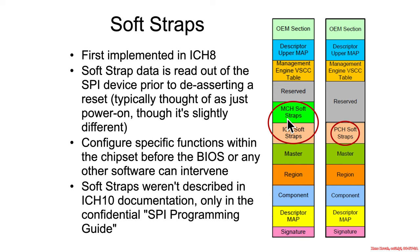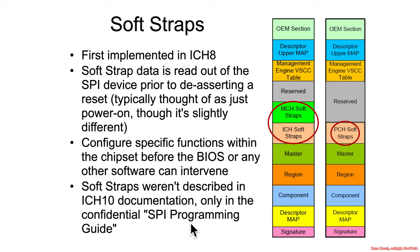Soft straps allow for reconfiguration of hardware functionality without having to physically reconfigure how it's laid out on the PCB. There were MCH straps and ICH straps in the north bridge/south bridge configuration, and PCH straps now on PCH systems. Even back in the ICH 10 world, the soft straps for the ICH 10 were not publicly described — those were only available in the confidential SPI programming guide.